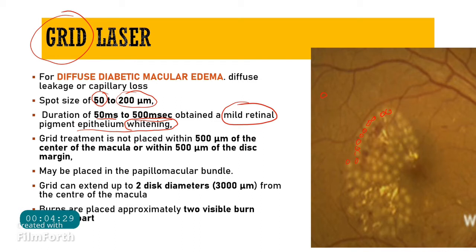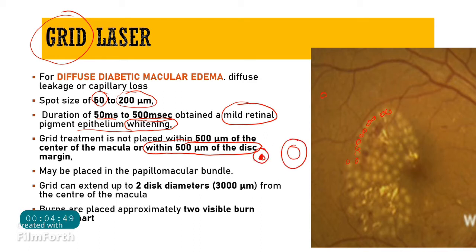Grid treatment must not be placed within 500 micrometers of the macular center. Similarly, do not place grid spots within 500 micrometers of the disc margin. Preserve both the macula's 500-micrometer zone and the disc's 500-micrometer zone. However, the papillomacular bundle — extending from the macula to the disc — can have laser spots applied to it in grid therapy.